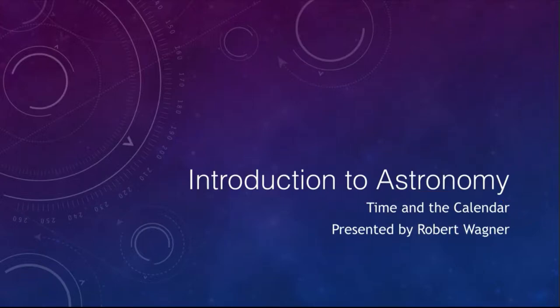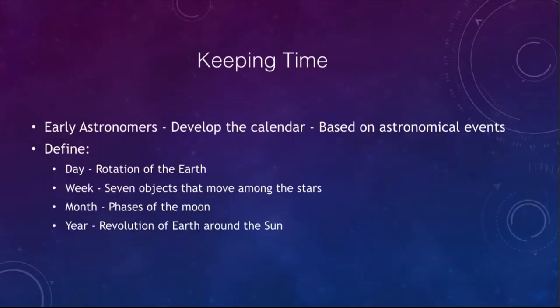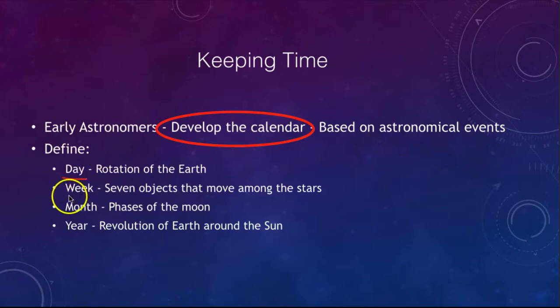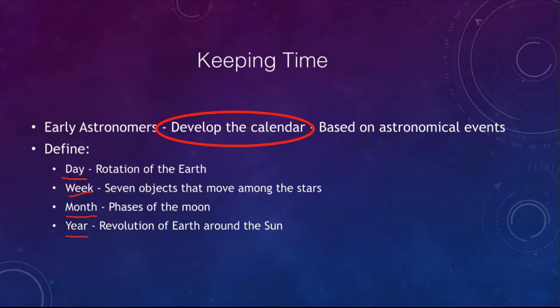Early astronomers developed a calendar based on astronomical events, using things like the day, the week, the month, and the year, which all have astronomical significance.